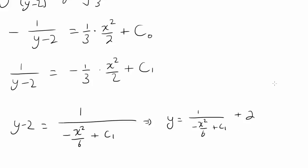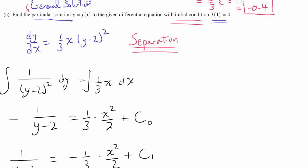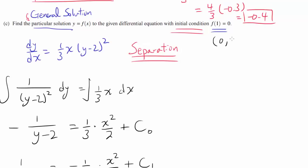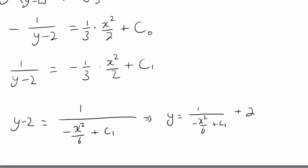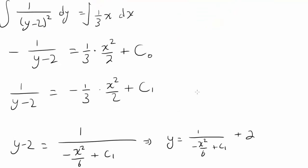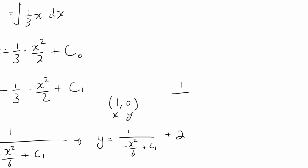And how do you find this constant? Using the initial condition that when x is 1, y is 0. So we know that this thing has to contain the point (1,0). So let's use that. When x is 1: 1/(-1/6 + C₁) + 2, and y is 0. So we can solve this equation.